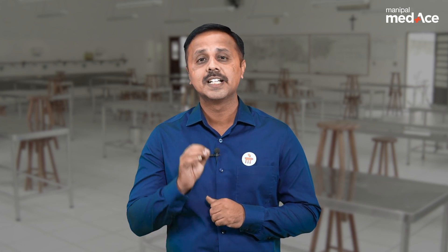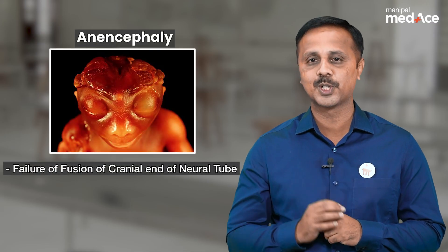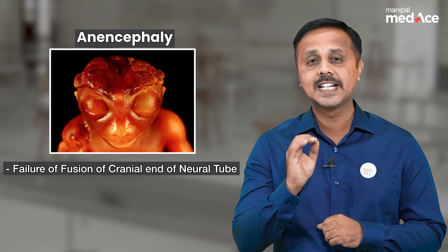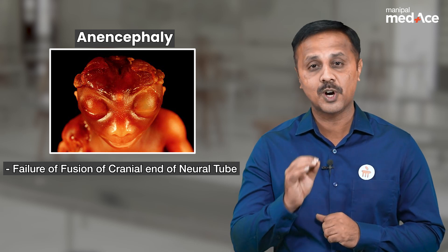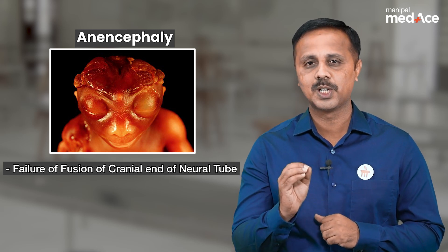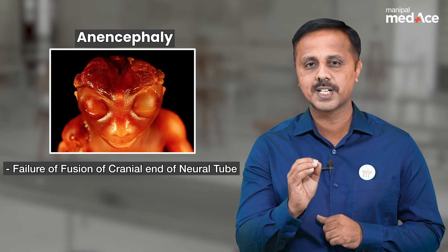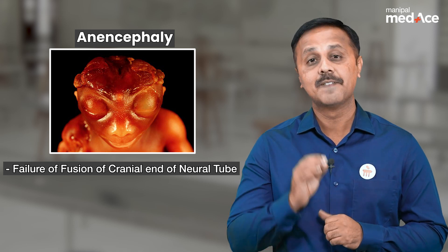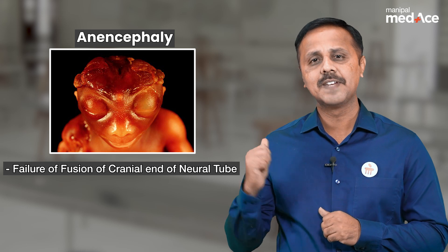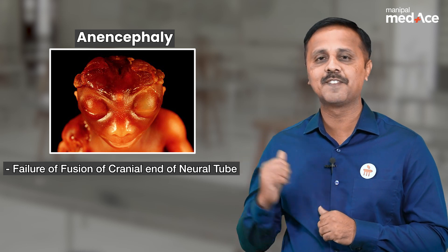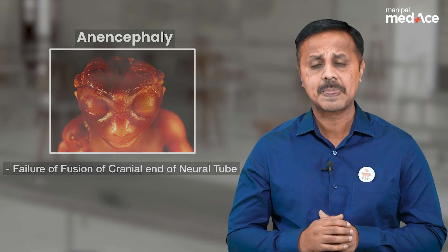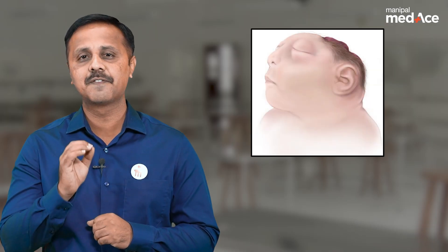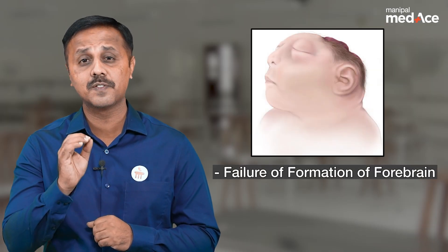What is the embryological basis for this? It is due to failure of fusion of the cranial end of the neural tube. Normally, the cranial end of the neural tube closes at about the 24th day. When this fails to happen, we get this severe anomaly called anencephaly.